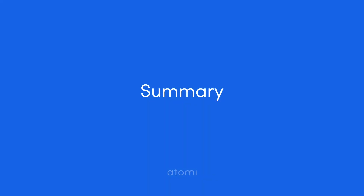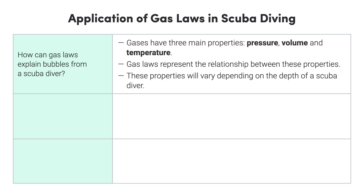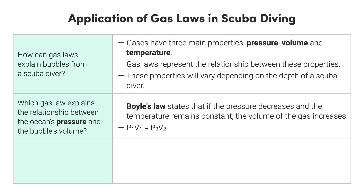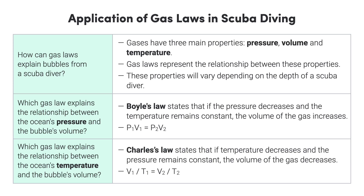Let's wrap up with a couple of questions. First, how can gas laws explain bubbles from a scuba diver? Gases have three main properties — pressure, volume, and temperature. Our gas laws represent the relationship between these properties. These properties vary depending on the depth of a scuba diver, so the gas laws can explain a lot about the behavior of bubbles being released. Next, which gas law can explain the relationship between the ocean's pressure and the bubble's volume? Boyle's Law states that if the pressure decreases and the temperature remains constant, the volume of the gas increases. Finally, which gas law can explain the relationship between the ocean's temperature and the bubbles' volume? Charles's Law states that if temperature decreases and the pressure remains constant, the volume of the gas decreases. See you next time!